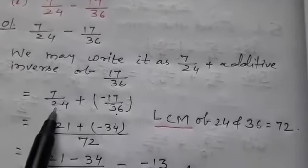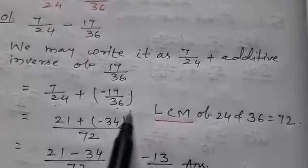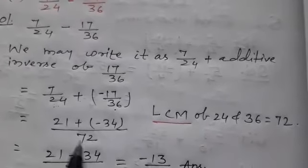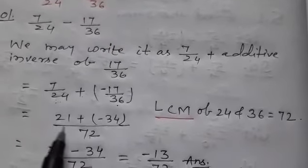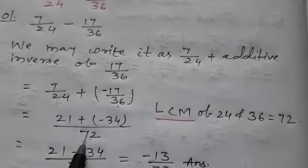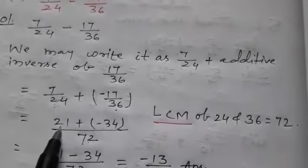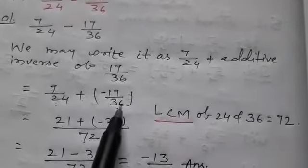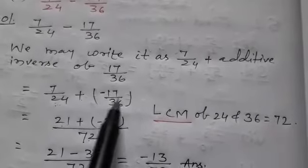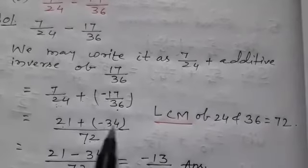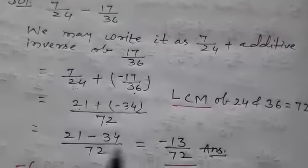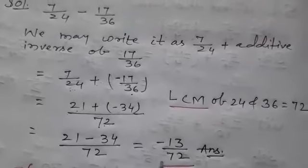We find the LCM of 24 and 36, which is 72. Now: 24 × 3 = 72, so 7 × 3 = 21. And 36 × 2 = 72, so −17 × 2 = −34. Now we solve it: (21 − 34)/72 = −13/72.